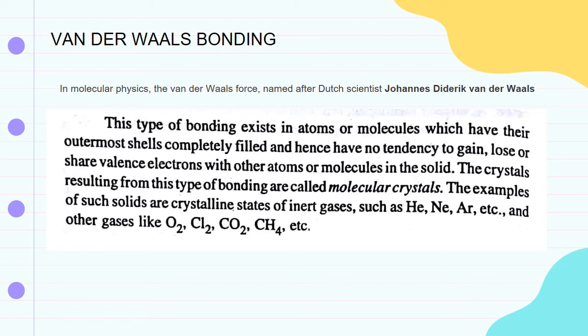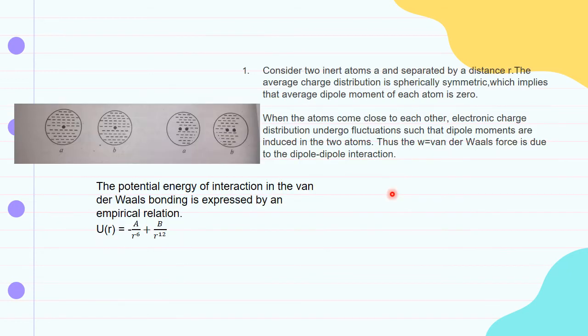Examples of such solids are the crystalline states of inert gases such as helium, neon, argon, etc. Now consider two inert atoms, A and B, which are separated by a small distance R.